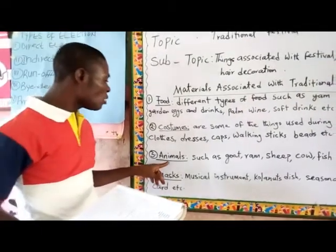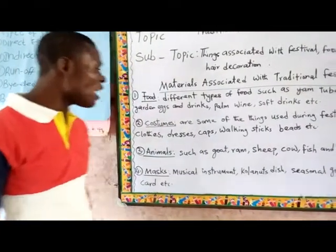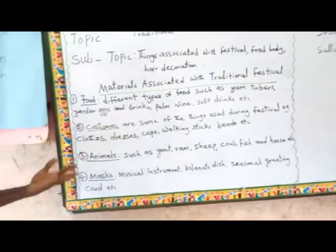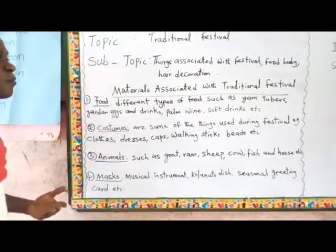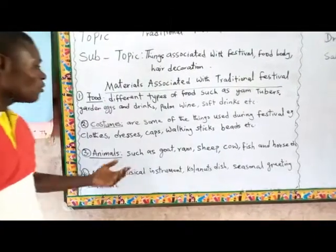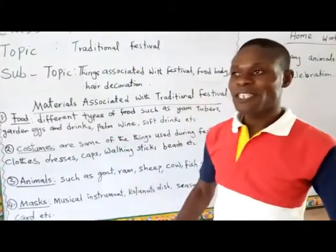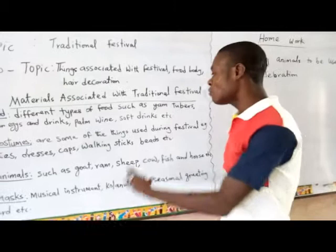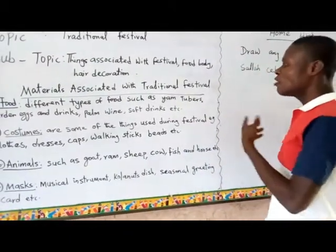Then we go to number three: animals such as goats, ram, sheep, cow, fish, horse, etc. Those are some animals used to mark a traditional festival. Most of the time, people will be slaughtering goats, sheep, or cows. Some people also use a horse that day to parade the environment, which people find interesting. Those are some of the animals that can be used in a traditional festival.